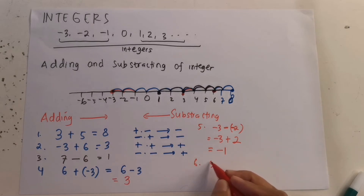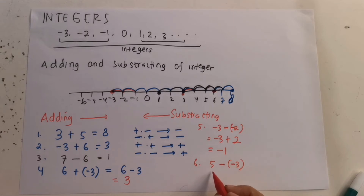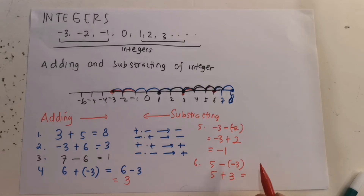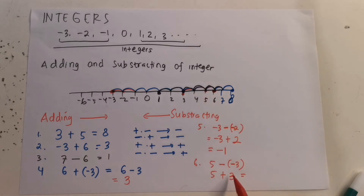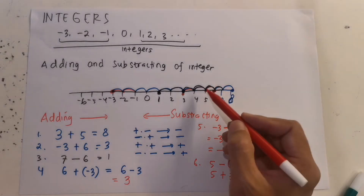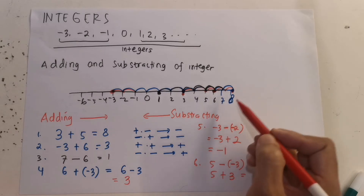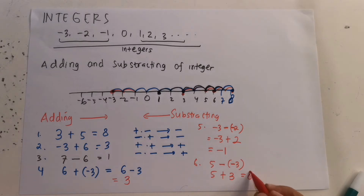Next example: positive 5 minus negative 3. This is minus meets minus, so the result is positive — it becomes 5 plus 3. We start from number 5 and move 3 places to the right — 1, 2, 3 — and we end at 8. So the answer is 8.